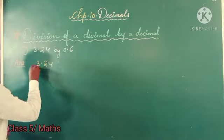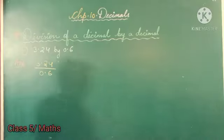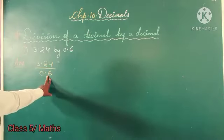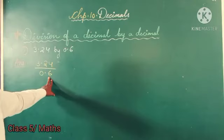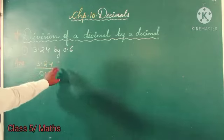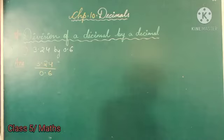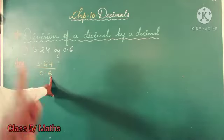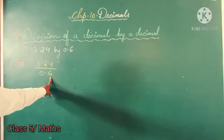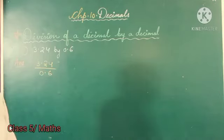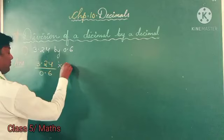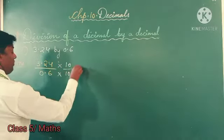Here what we will do: we will see the divisor, that is 0.6. We will try to make this divisor into a whole number. So to convert this to a whole number, we will multiply by 10.